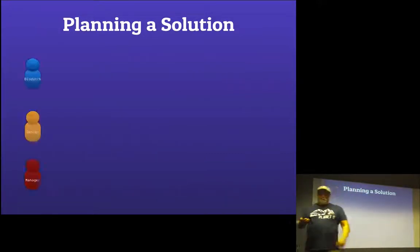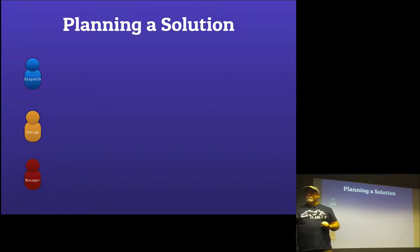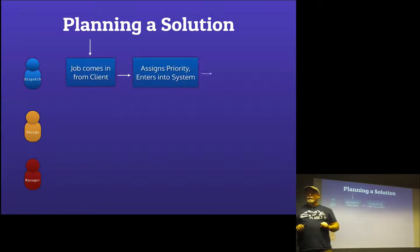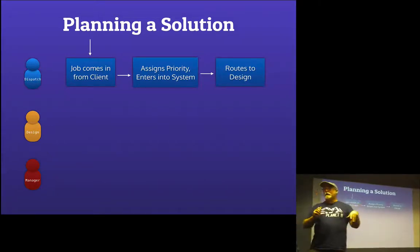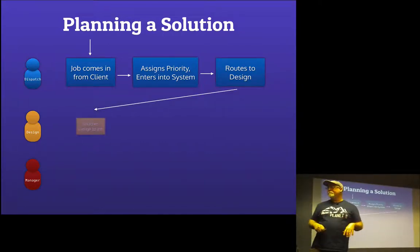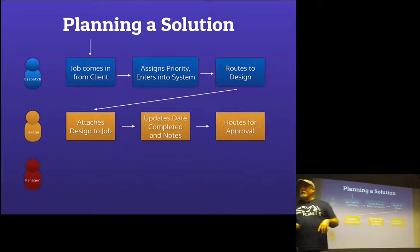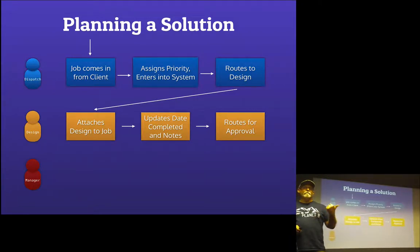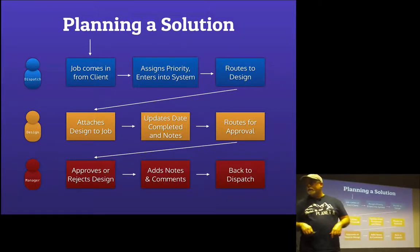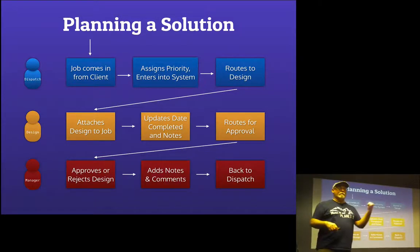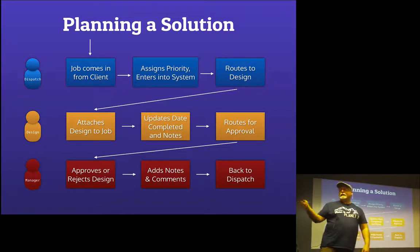Now we're going to plan a solution. We've got a dispatcher, a designer, and a manager. Jobs come in from the client. The dispatcher gets those jobs, assigns priority, enters them into the system, and routes them to design. Design picks up the job, adds their design and notes, the date completed, and routes it to the manager for approval. The manager approves or rejects the design, adds notes and comments, and routes it back to dispatch. You're basically creating a job queue system.